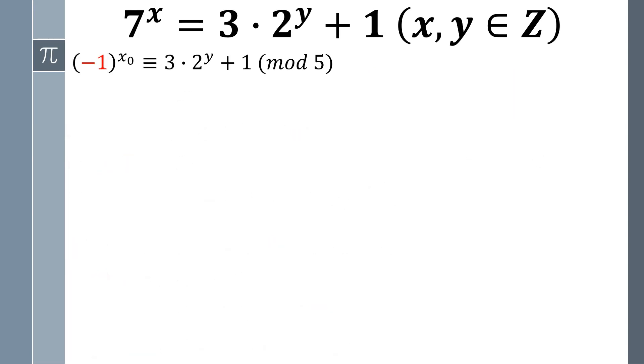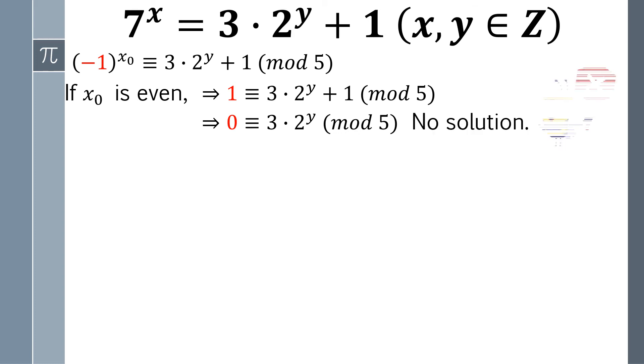Let's continue to solve this congruent relationship. If x0 is an even number, then left side will become 1. And the congruent relationship will turn to 3 times 2 to the y power is congruent with 0 modulo 5. Apparently, this is not possible as 3 times 2 to the y power is not divisible by 5. So there's no solution here.